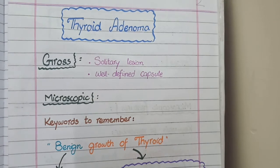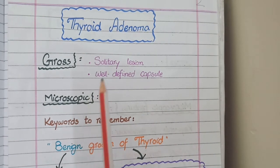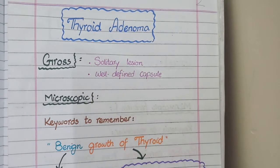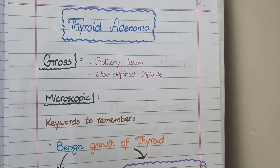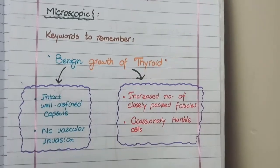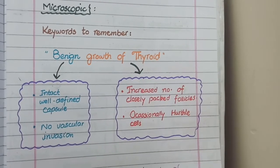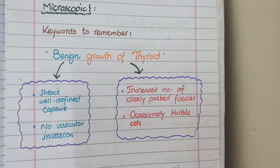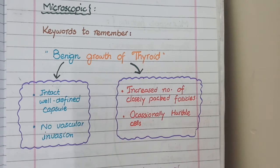On gross examination, follicular adenoma appears as a solitary nodule with a well-defined capsule, consistent with its benign nature. Microscopically, being a benign growth of thyroid tissue, it does not show capsular or vascular invasion and displays an increased number of closely packed follicles.